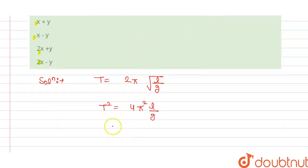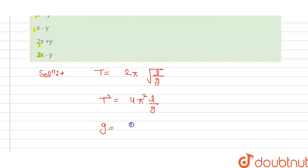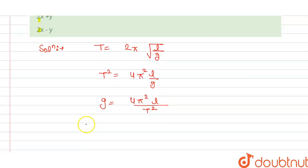We have to find the fractional error in G that is equal to 4π²L divided by T².